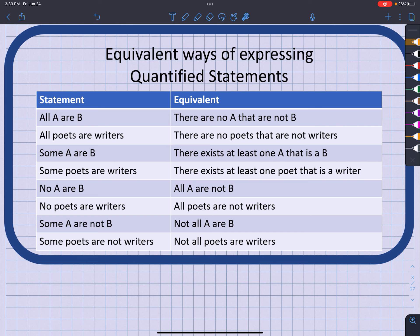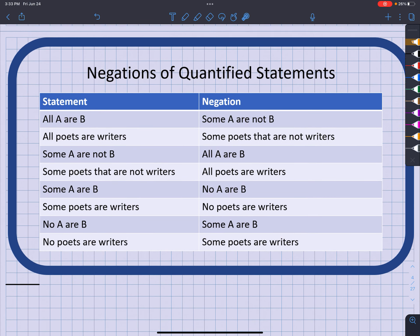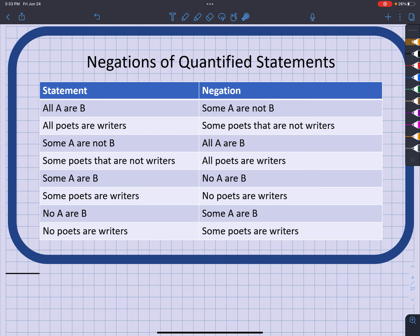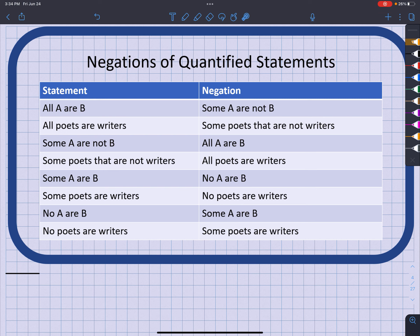Now we need to know how to negate these quantified statements. The negation of 'all A's are B's' is 'some A are not B,' and vice versa — these go back and forth. The negation of 'some A's are B's' is 'no A's are B's,' and the negation of 'no A's are B's' is 'some A's are B's.'